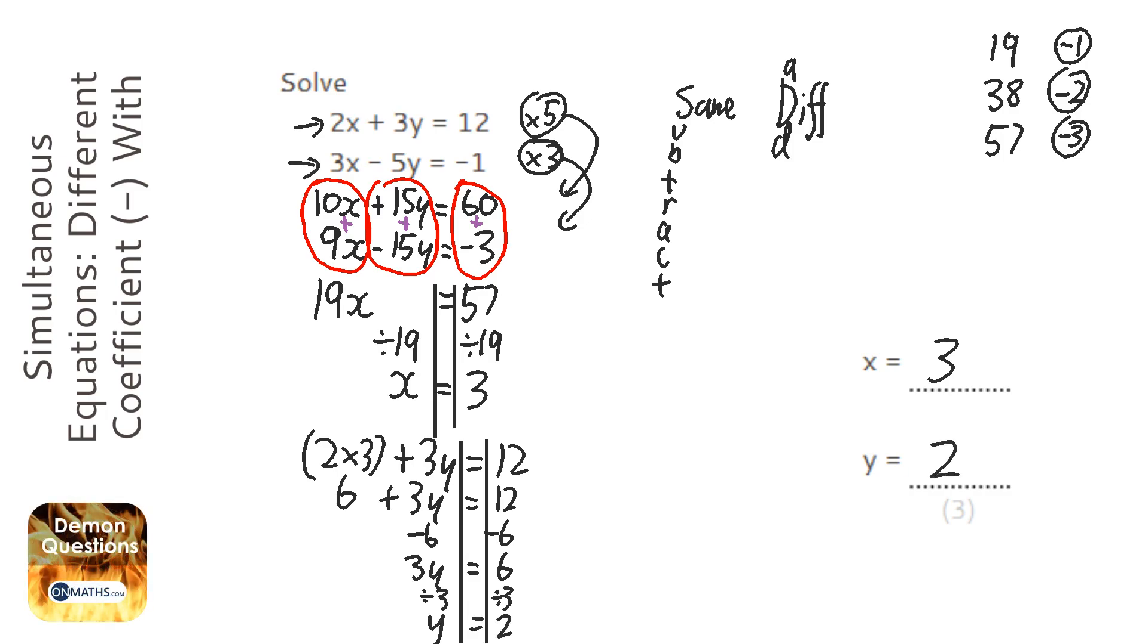Now, we can check that by putting it into the second equation. 3 times 3 is 9. Take away 10 is going to be minus 1, so we know it's correct.